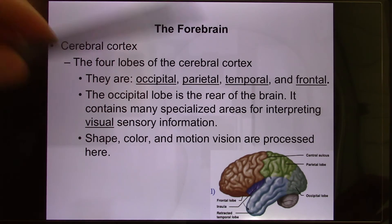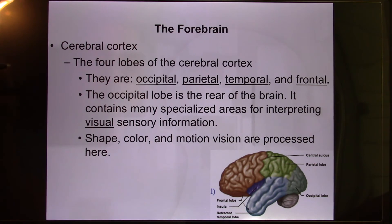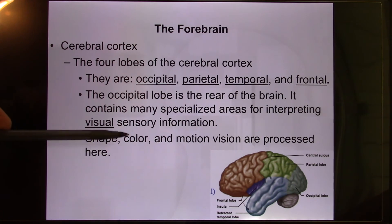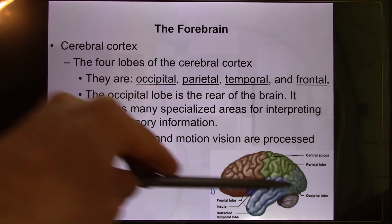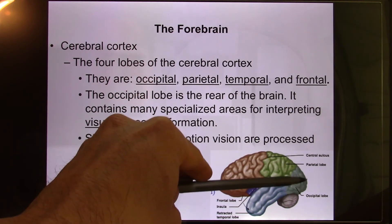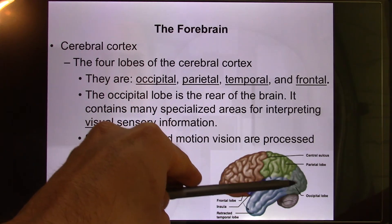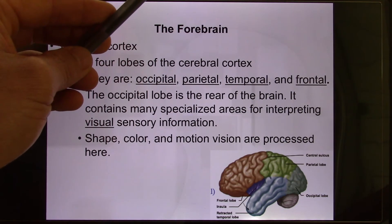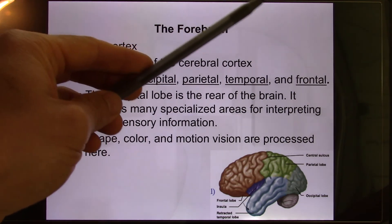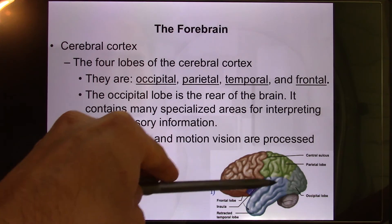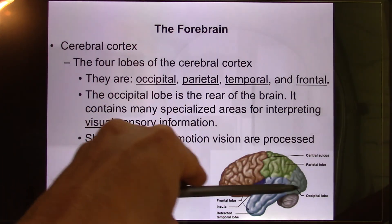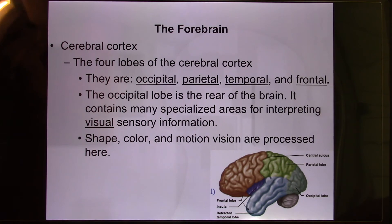So you have four lobes: the occipital lobe for visual function — processing shape, color, and motion in different visual cortex areas. We'll talk more about the visual system in chapter four. Visual processing also spreads to other lobes, but the main visual area is your occipital lobe.